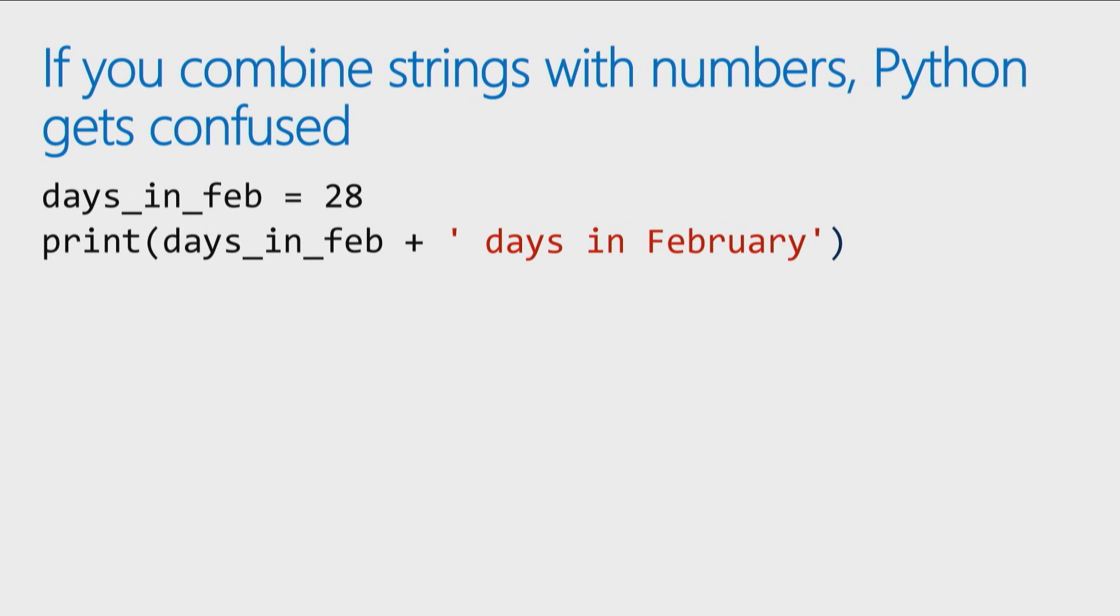One thing you will run into very quickly once you start working with numbers, is that when you start combining different data types, so a string data type and a number data type, Python will get confused. So in this case, I have how many days in February? 28, and I just say let's display on the screen, 28 days in February.